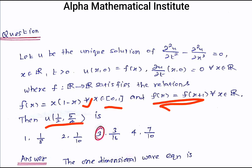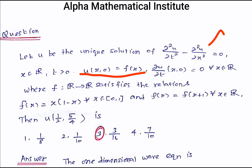In this problem, a wave equation is given: ∂²u/∂t² − ∂²u/∂x² = 0, along with the initial conditions u(x, 0) = f(x) and ∂u/∂t at (x, 0) = 0. The function f satisfies f(x) = f(x + 1) and f(x) = x(1 − x) for all x in [0, 1]. We have to evaluate u(1/2, 5/4).